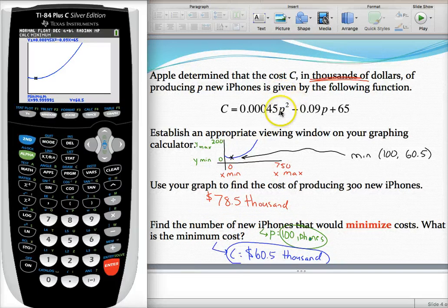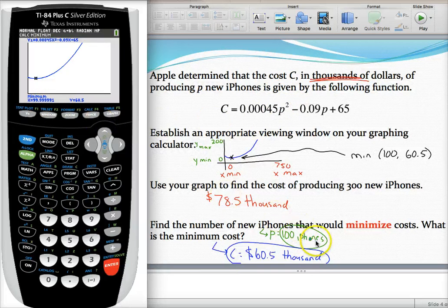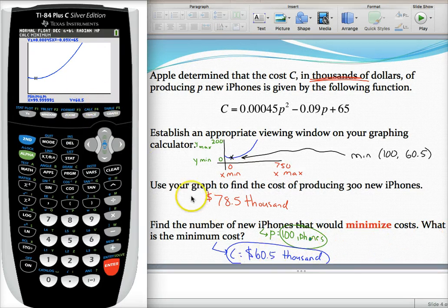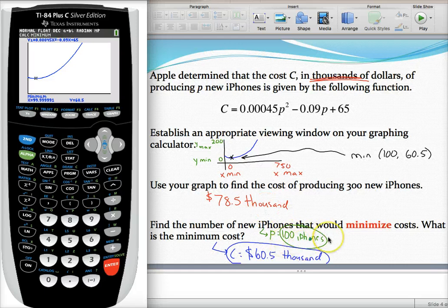They say find the number of iPhones that will minimize cost. That's the P value, or in this case the X value. It looks like 100 iPhones would be the magic number to produce. The minimum cost, the Y value, is 60.5 thousand. That's how I find my window, find my vertex, and interpret it to answer the question.